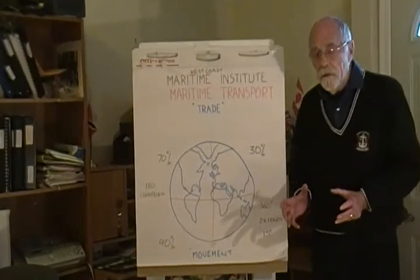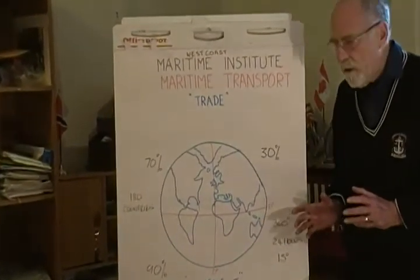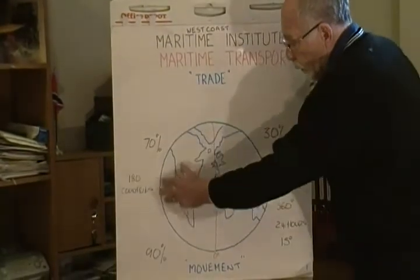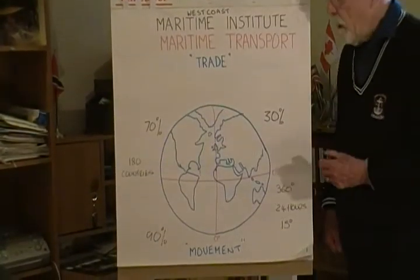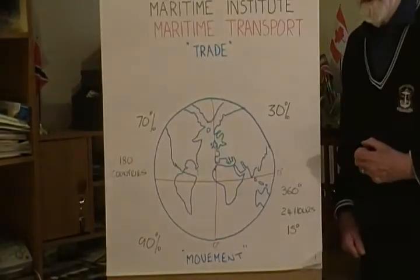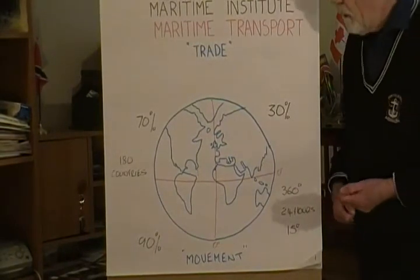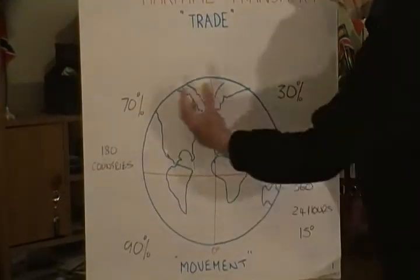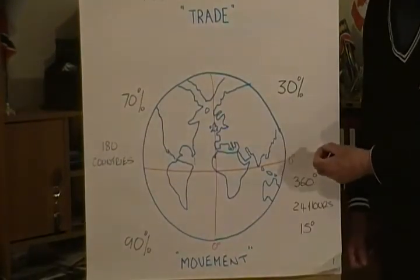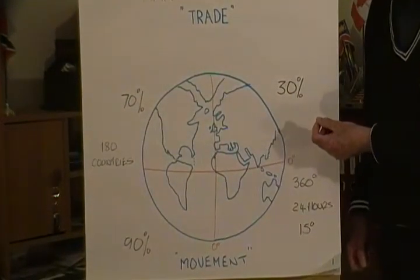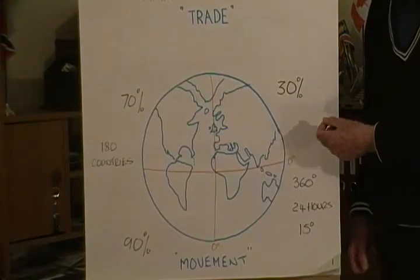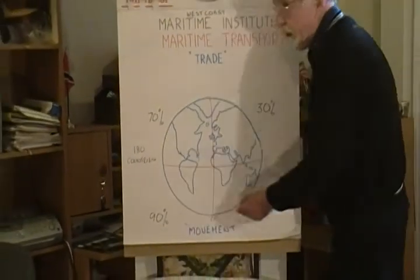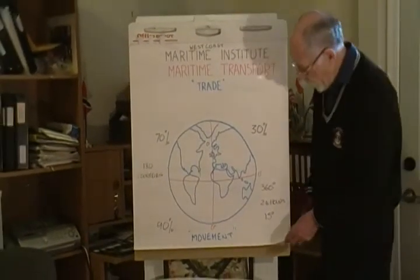Before we go any further, let's just remind ourselves about the world marketplace. The world is a big marketplace because there are 180 nations all trading with each other. This beautiful planet we live on is 70% sea and 30% land, and 90% of international trade goes by sea.